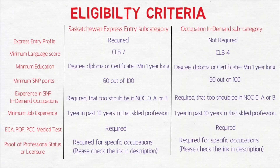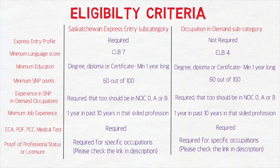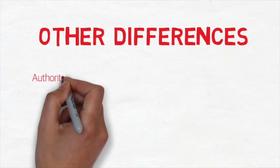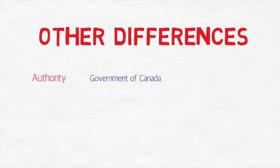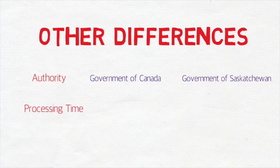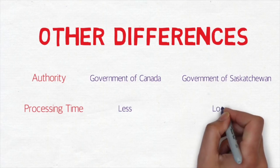Having only one year of experience will likely not get you to 60 out of 100 points, so as much as possible you should have at least four or more years of experience. For the ECA (Educational Credential Assessment), proof of funds, police clearance certificate, and medical test, both subcategories require these. Proof of professional status or licensure is required for specific occupations — please check the link in the description box. The approving authority differs: the Government of Canada for Express Entry, and the Government of Saskatchewan for Occupation in Demand, and processing time is much less for Express Entry.